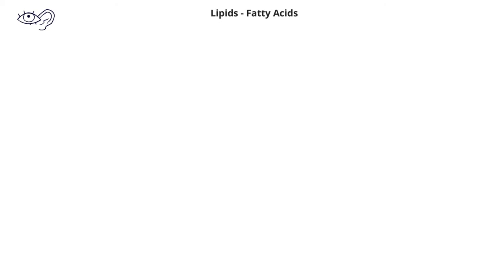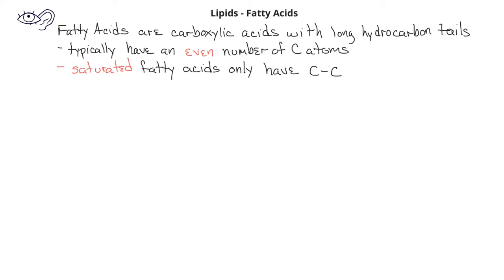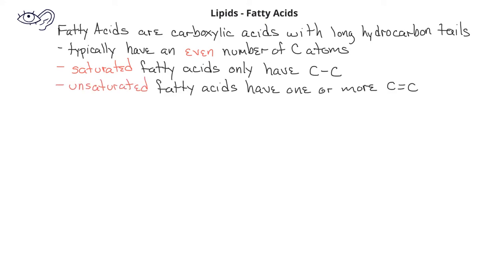The first type of lipid we'll introduce are some of the simplest lipids — the fatty acids. Fatty acids are carboxylic acids with long hydrocarbon chains. Typically, naturally occurring fatty acids will have an even number of carbons. Saturated fatty acids will have all of their carbon-carbon bonds as single bonds, while unsaturated fatty acids have one or more carbon-carbon double bonds.